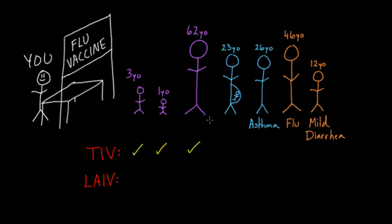For the last family — the 46-year-old woman and her 12-year-old son — the woman has the flu. If she's moderately ill, I would hold off on giving her the TIV vaccine. Her son, on the other hand, has mild diarrhea. Since that's a mild illness, he's still okay to get TIV. So that's how TIV distribution would look across all three families.